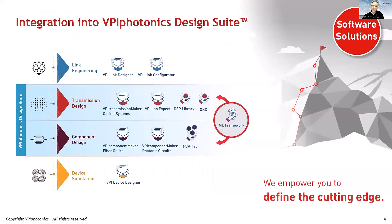This fits into VPI Photonics Design Suite, which has tools at many different levels of abstraction from devices all the way to networks. It includes transmission design — VPI Transmission Maker for optical systems — as well as component design. If you're designing a fiber amplifier, you can use VPI Component Maker Fiber Optics, or for a photonic integrated circuit, VPI Component Maker Photonic Circuits. We started at the optical transmission system level, and I'll take you through an example of that.